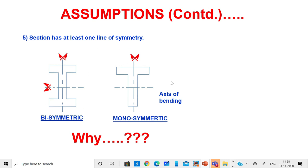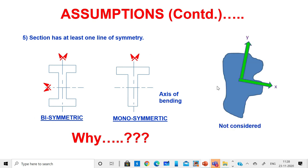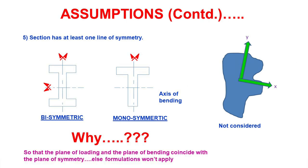Finally, we assume the section has at least one line of symmetry — either bisymmetric or monosymmetric. We are not considering sections without symmetry, because the plane of loading and the plane of bending must coincide with the plane of symmetry of the section; otherwise the analysis will not be valid. So we stop here.